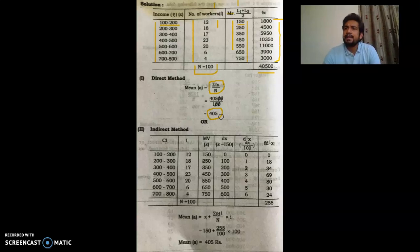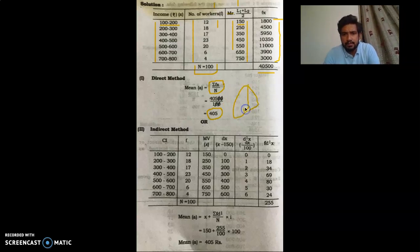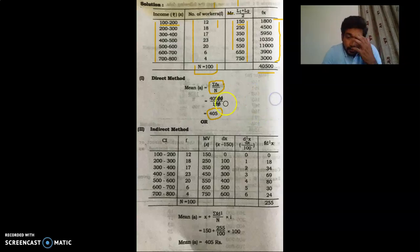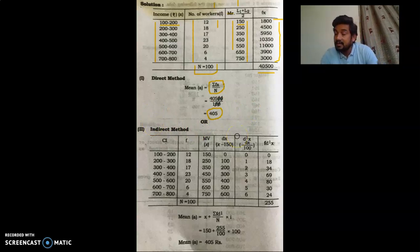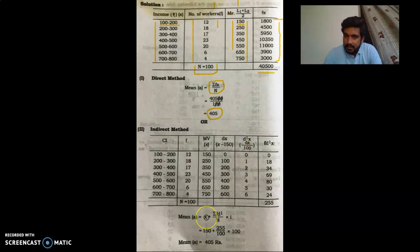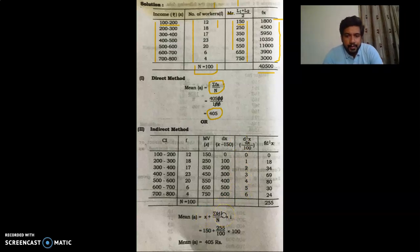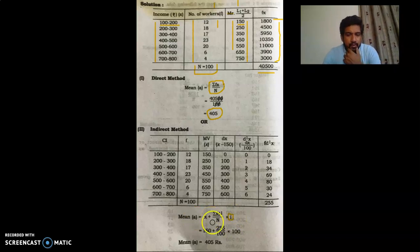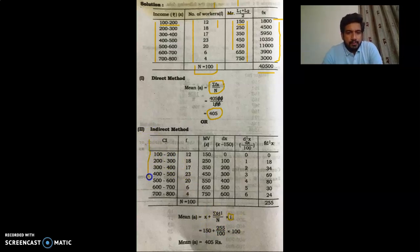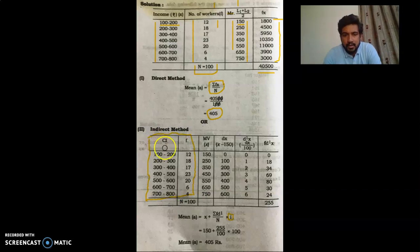Now we will cross-check this answer using the indirect method. Moving to the indirect method, the formula is: Mean = X̄ (assumed mean) + (ΣFD'x / N) × I, where I is the class interval. Again, we write down the class interval and frequency columns as given, then we proceed to calculate the additional columns as per our requirement.